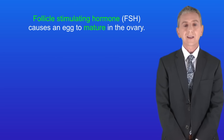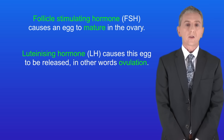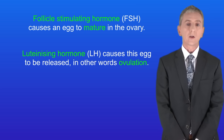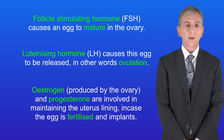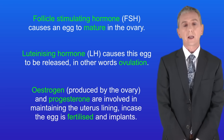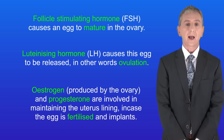Firstly, follicle stimulating hormone or FSH causes an egg to mature in the ovary. Luteinizing hormone or LH causes this egg to be released — in other words ovulation. And finally the hormones estrogen, produced by the ovary, and progesterone are involved in maintaining the uterus lining in case the egg is fertilized and implants. Remember that if the egg does not get fertilized by sperm then both the egg and the uterus lining are released and the woman has a period.